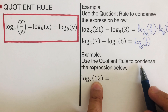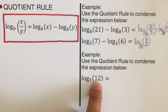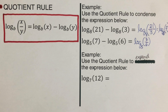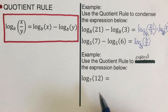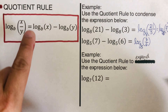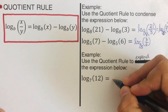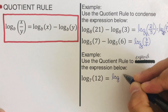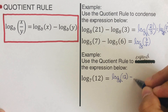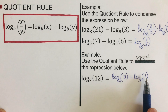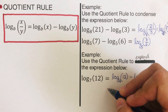Now we have log of 12 to expand. When we expand using the quotient rule, we write it as two log expressions subtracted from each other using factors of 12. For example, log of some value over 1 equals 12.